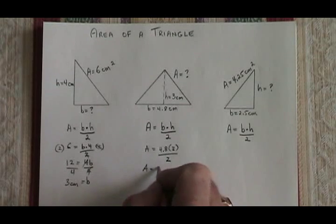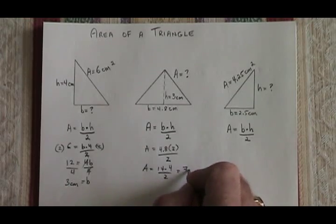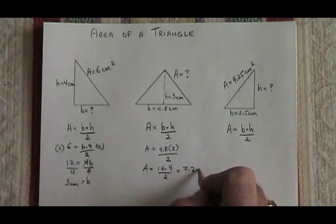Area is equal to 14.4 divided by 2, which is equal to 7.2. The units were centimeters, so the unit of area is centimeters squared.